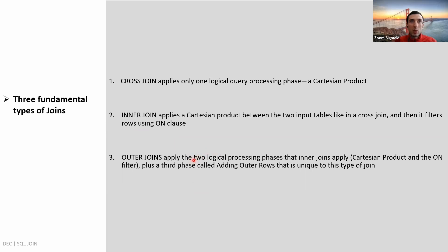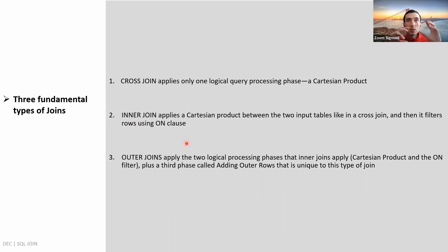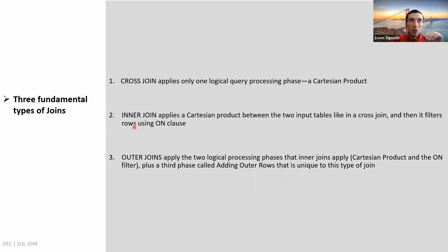To summarize the three fundamental join types: the cross join has only one logical processing phase — the Cartesian product. The inner join has two phases — Cartesian product and then filtering rows using the ON clause. The outer join has three logical processing phases — Cartesian product, filtering using the ON clause, and adding outer rows. Now let's go into more detail to see how each of these joins works.